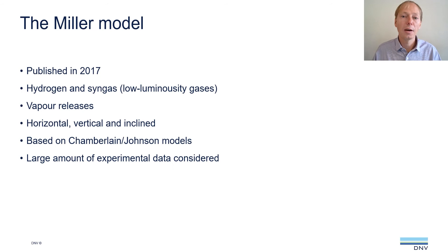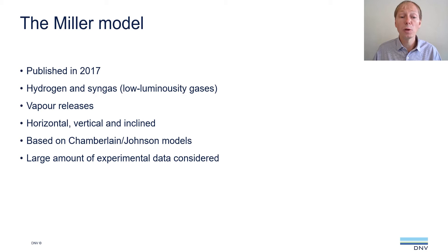Because the existing Jetfire models based on hydrocarbon data were found not to be satisfactory to predict Jetfire radiation from low-luminosity flames like hydrogen and syngas, Derek Miller presented a new Jetfire model for these types of Jetfires. We'll hereafter refer to this as the Miller model. It was published in 2017 and applies to hydrogen and syngas and, in general, to low-luminosity gases. The model is applicable to vapor jet fires and allows for horizontal, inclined, and vertical releases. It is based on the Chamberlain and Johnson models but extended in various ways, and was derived by looking at a large amount of experimental data for hydrogen and hydrogen mixture releases.